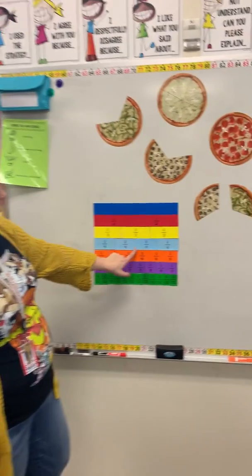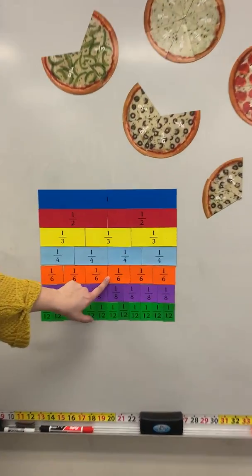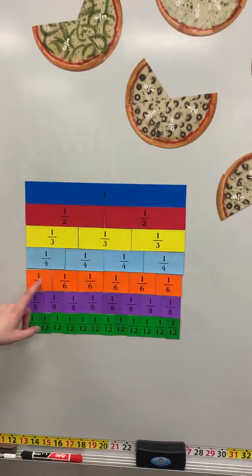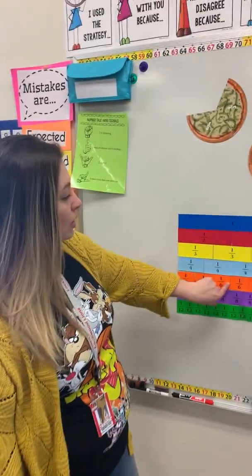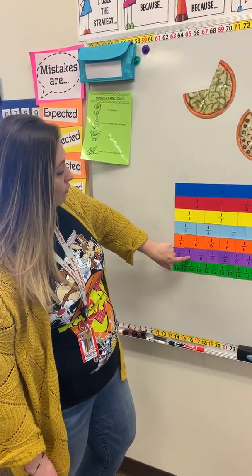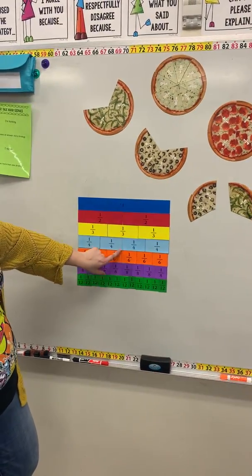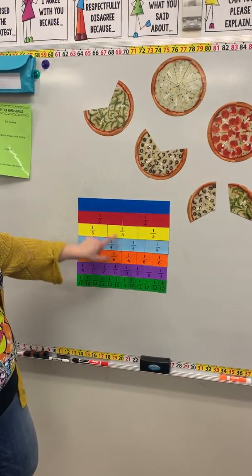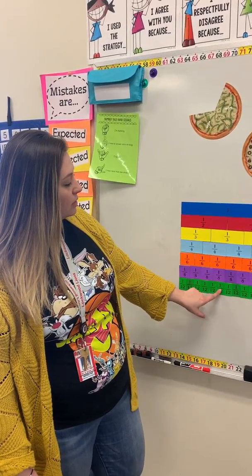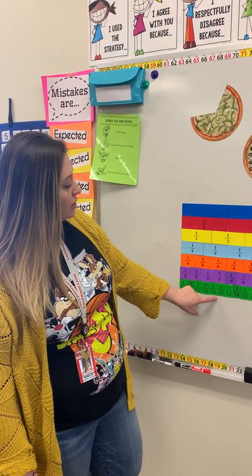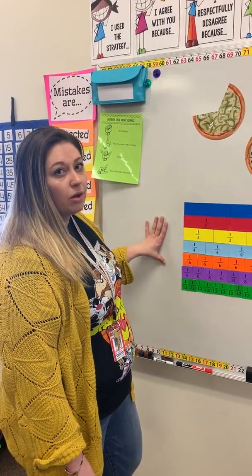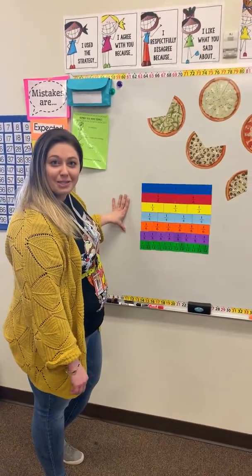If we keep going down from there, we have 3 out of 6, or 3 sixths, that is also equivalent to 1 half. Then there's 4 eighths, which is also equal or equivalent to 1 half. And finally, 6 twelfths is also equivalent to 1 half. So this is a really good tool to help you find equivalent fractions.